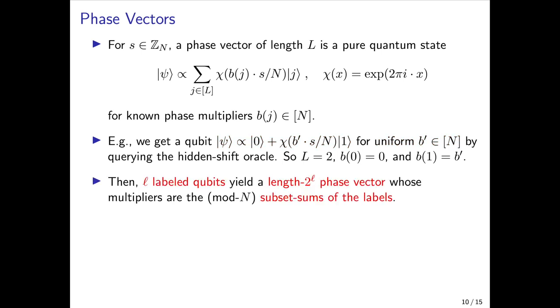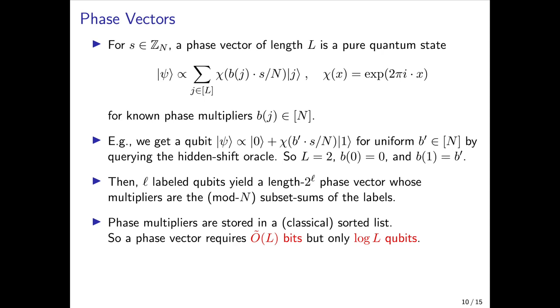So this qubit is actually a length 2 phase vector where b(0) is 0 and b(1) is just b'. Moreover, if we get L of these labeled qubits, each with their own single label, we can tensor them together and get a length 2^L phase vector whose multipliers are just all the subset sums of the individual labels of the input qubits. Again, the phase multipliers are known integers and we store them in a sorted list in the classical memory. So overall a phase vector requires roughly L classical bits but only log L qubits because it's over L different basis elements. This fact is the essential source of the exponential improvement in the quantum space requirements of Kuperberg's second sieve versus his first one.